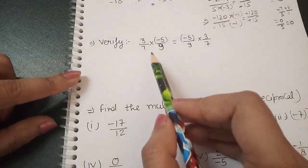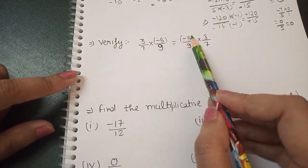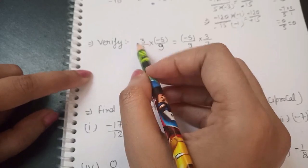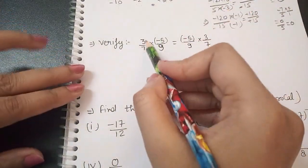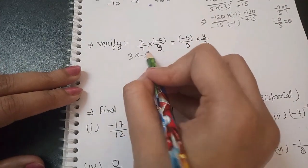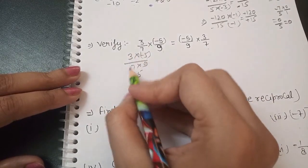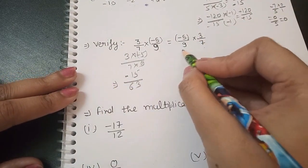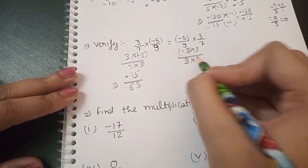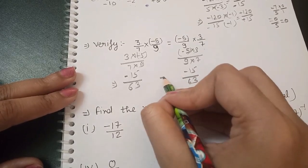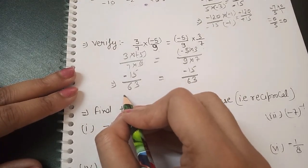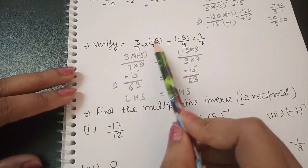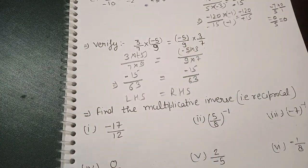Next question: verify that a/b × c/d = c/d × a/b. Left side: multiply 3/7 × (-5/9). Numerators: 3 × 5 = 15, sign is minus. Denominators: 9 × 7 = 63. Result: -15/63. Right side: multiply (-5/9) × (3/7). Numerators: 5 × 3 = 15, sign is minus. Denominators: 9 × 7 = 63. Result: -15/63. Both sides are equal, hence verified.